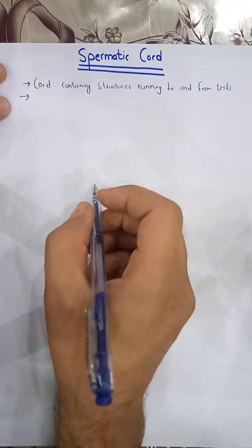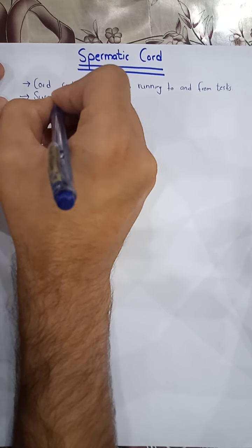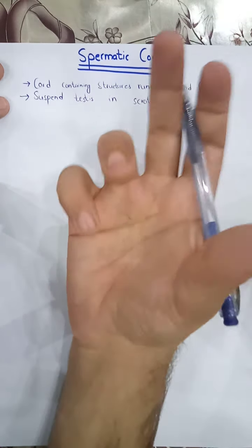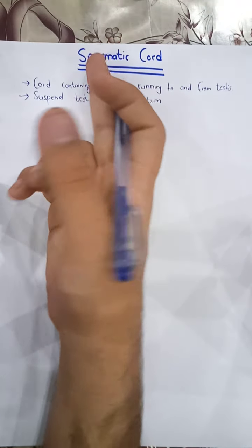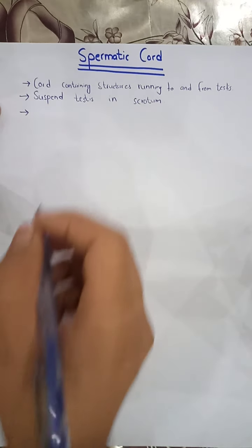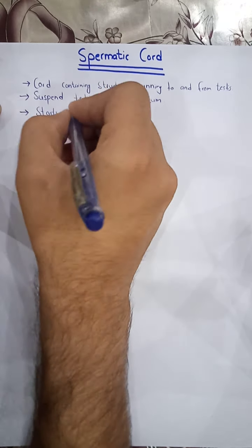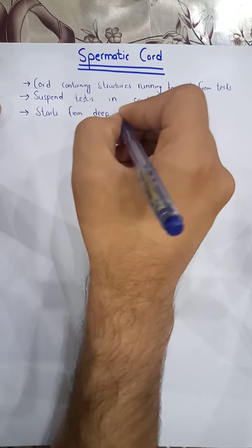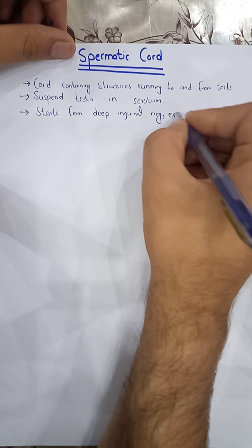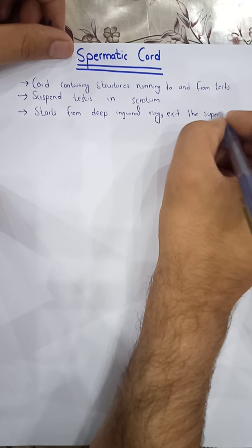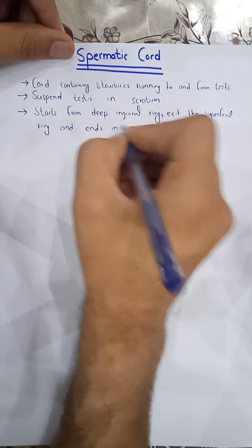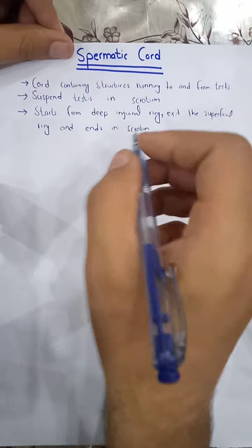The spermatic cord will suspend the testes in the scrotum and hold the testes in the scrotum. Regarding its start and end: it will start from the deep inguinal ring, then it will exit the superficial inguinal ring, and ends in the scrotum at the posterior border of the testes.